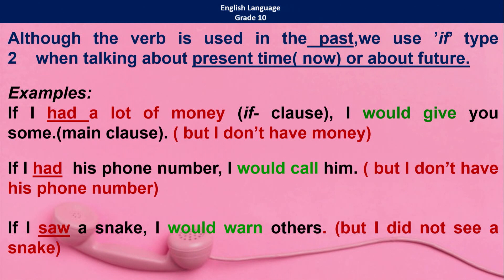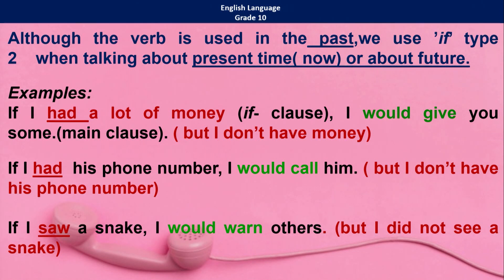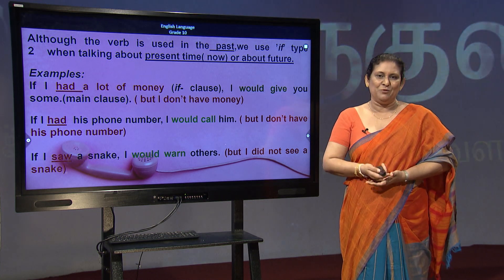Look at the example: 'If I had a lot of money, I would give it to you.' That means I don't have money now, so I can't give you. 'If I had his phone number, I would call him' — that means you don't have his number, so it is relevant to the present. 'If I saw a snake, I would warn others' — but I did not see a snake, so I could not warn you. Though it is the if clause in past tense, we are talking about present or future conditions.